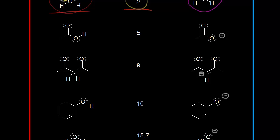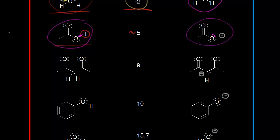Next, let's look at acetic acid. Here's the acidic proton on acetic acid, and that proton has a pKa value of approximately five. If a base takes that proton, these electrons are left behind on the oxygen, which gives that oxygen a negative one formal charge. So the acetate anion is the conjugate base to acetic acid.